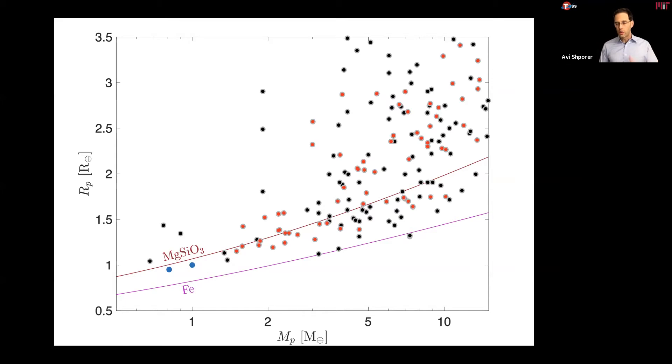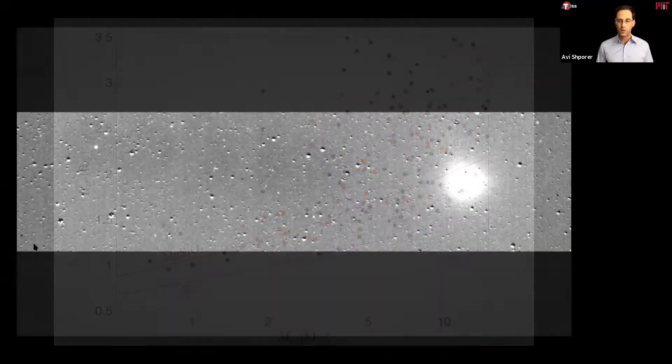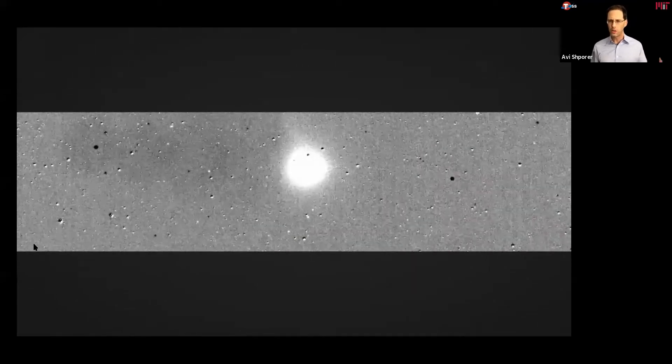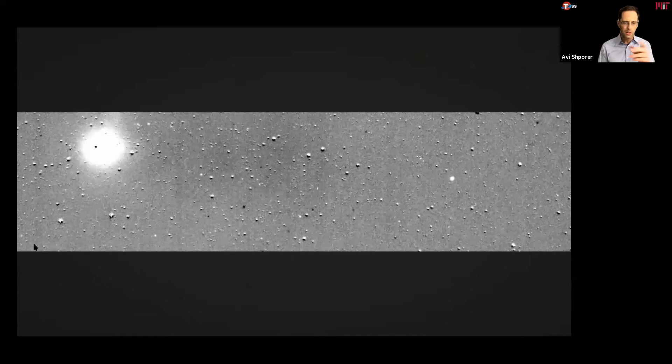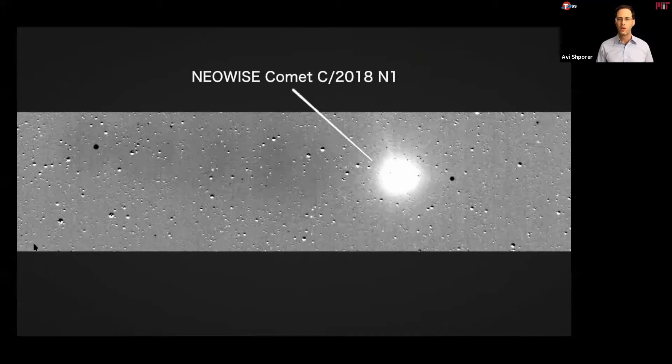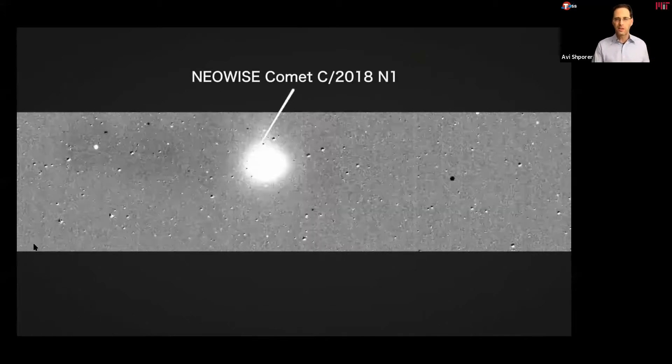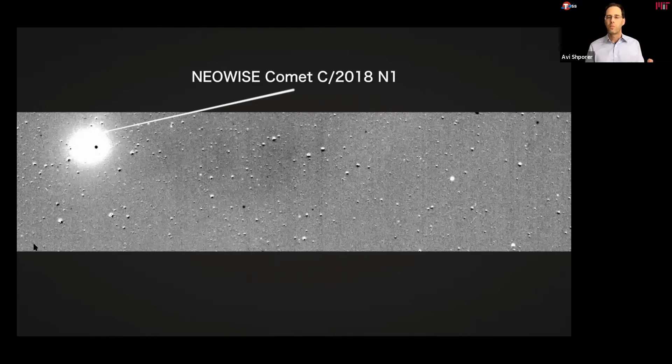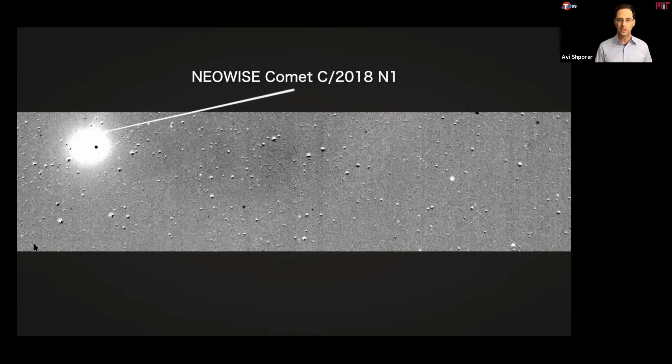Another thing TESS can do, and much more relevant to the AGU audience, is solar system objects. So here is an example of a comet we identified very early on in the mission, already in 2018. You can see the comet tail if you look carefully. This was not discovered by TESS, it was a known comet that we saw in TESS data, but just as an example of how, at least this animation makes it look that it's very easy to do this. We can also discover asteroids in TESS data, and that is work which is ongoing right now.